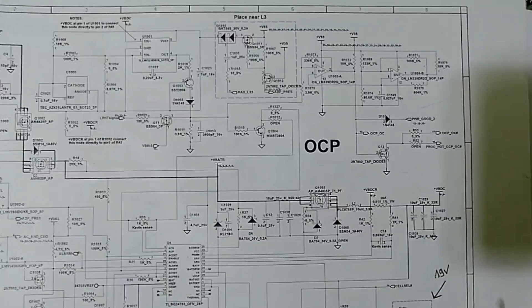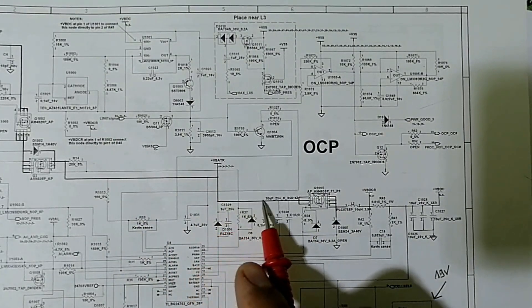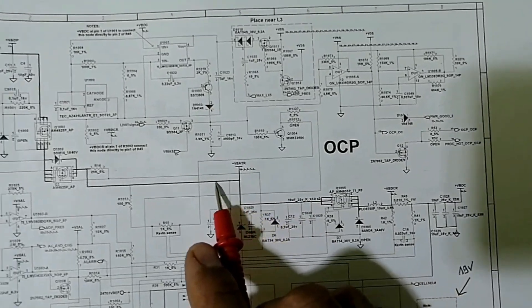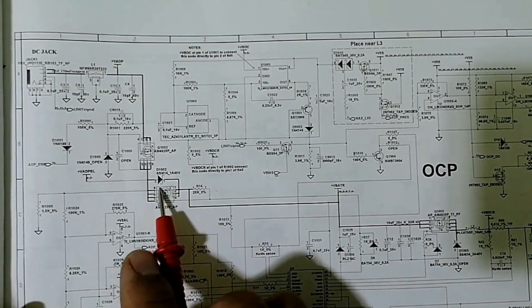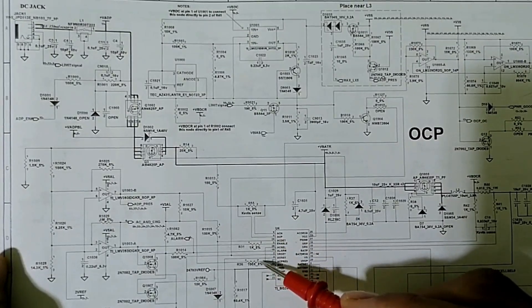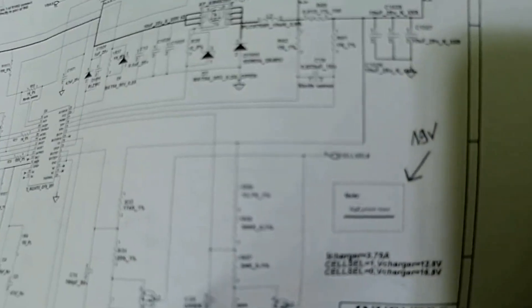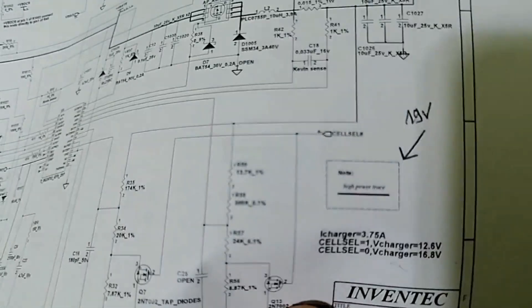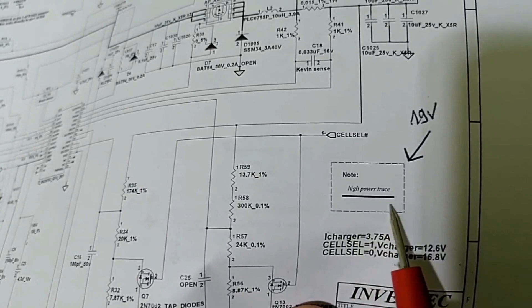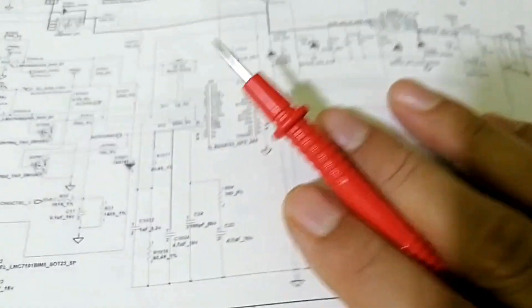In the circuit diagram you will find the same working principle. Do you see this bolded line? This bolded line means we have a high voltage here, and those thin lines mean just a signal, a low voltage. There is a note in the schematic — do you see this line? It means a high power trace at 19 volts. Let's see an IC, for example — let's see this IC over here.